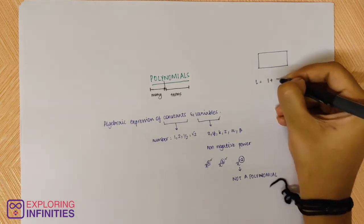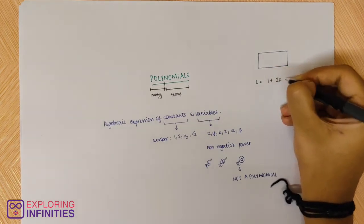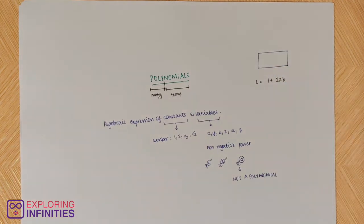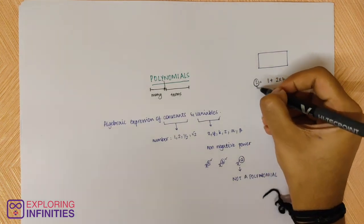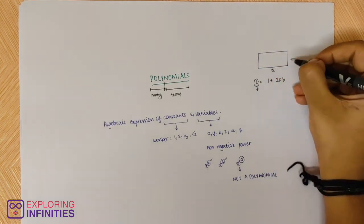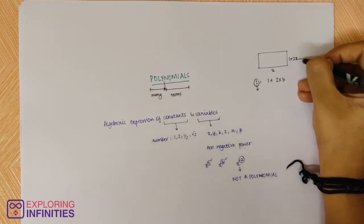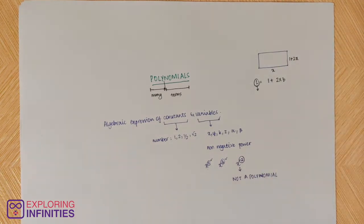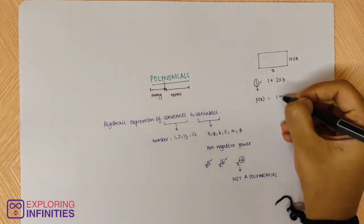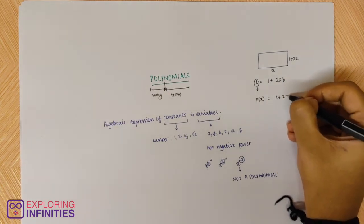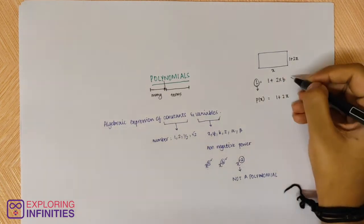Length is 1 more than twice its breadth. Length is what we are supposed to find. They'll probably give us the breadth and tell us to find the length. So here, length can be determined as p(x) = 1 + 2x, where the breadth is x.